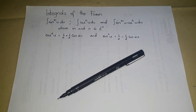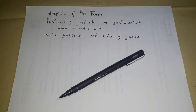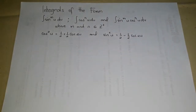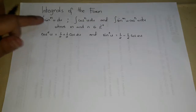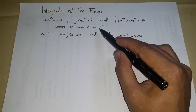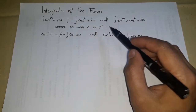Hello everyone and welcome to my channel. This is the second part of my lecture series for solvable groups of trigonometric integrals. My last video featured how to integrate powers and products of sine and cosine functions with odd powers. This time I'll be teaching you how to integrate powers and products of sine and cosine functions with even powers — integrals of the form integral of sin^m(u) du, cos^n(u) du, and integral of sin^m(u) cos^n(u) du, where m and n are positive even integers.